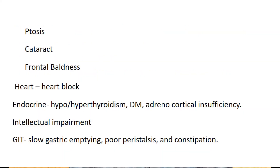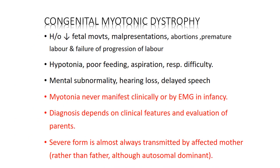The associated medical disorders can be many — for example, ptosis (usually partial), cataract (usually posterior subcapsular), frontal baldness, heart block, endocrine abnormalities like thyroid dysfunction, diabetes, adrenocortical insufficiency, and intellectual impairment. GIT motility being slow can cause poor peristalsis and constipation. In history, you will find decreased fetal movements, mal-presentations requiring cesarean section, abortions, premature labor, and failure of progression of labor.